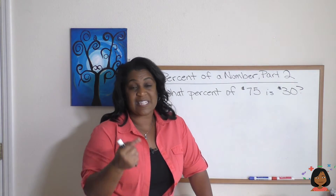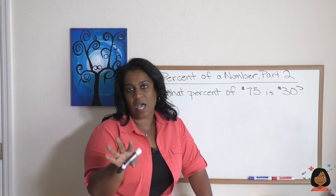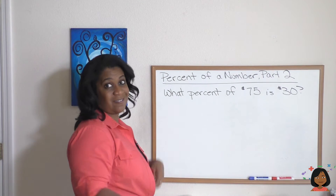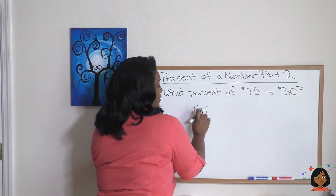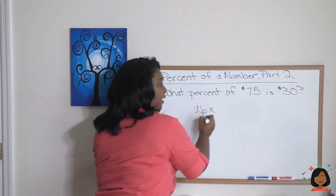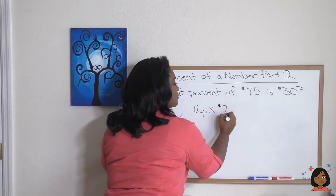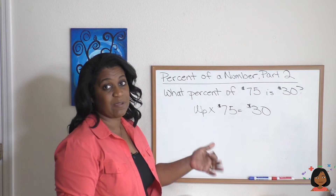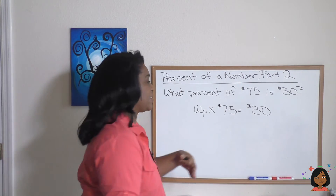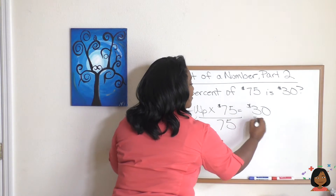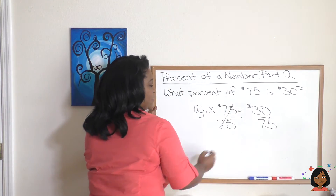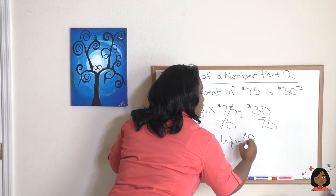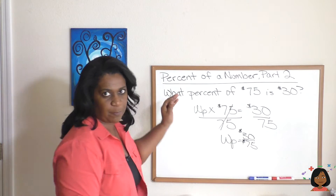Here's problem number two — a little more difficult. That first problem had a nice denominator of 100, but let's see what happens this time. Translating: "what percent" gives us W, "of" means multiply, 75 dollars, "is" means equals, 30 dollars. Mathematical statement: W × 75 = 30. Missing number in multiplication, so we divide both sides by 75. That crosses out the 75, leaving us with: W percent = 30/75. Dollar signs won't matter much since we're looking for a percent.